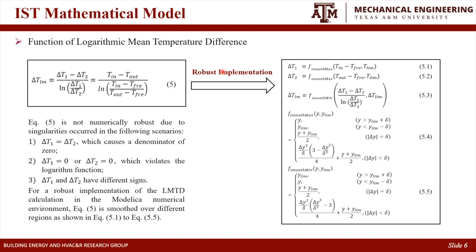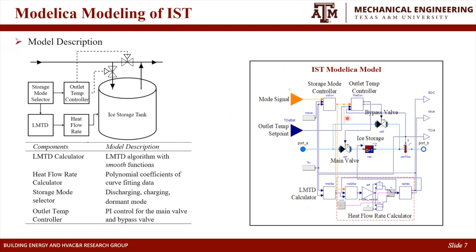As you can see in the graph, functions 5.1 to 5.5 ensure the function is continuous. Based on this mathematical model, we build the model — as you can see in the second figure — in the terminal phase. That's the details about the S-storage tank in that model. There are four key components in this S-tank: the storage mode selector, the outlet temperature controller, the log mean temperature difference calculator, and the heat flow rate calculator.